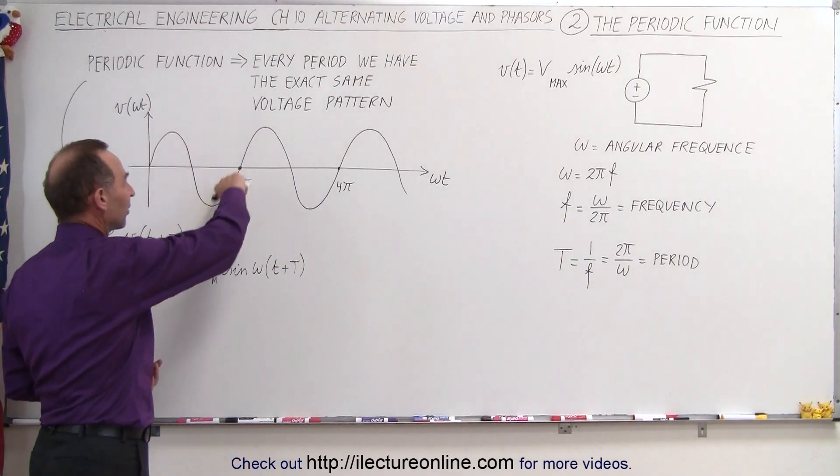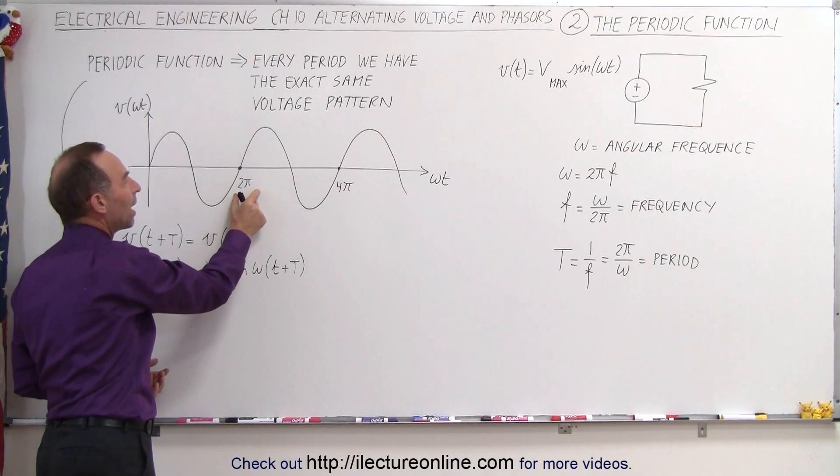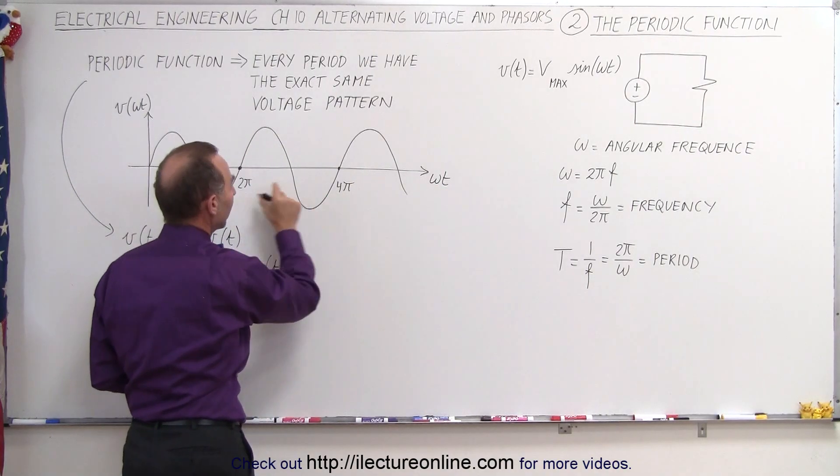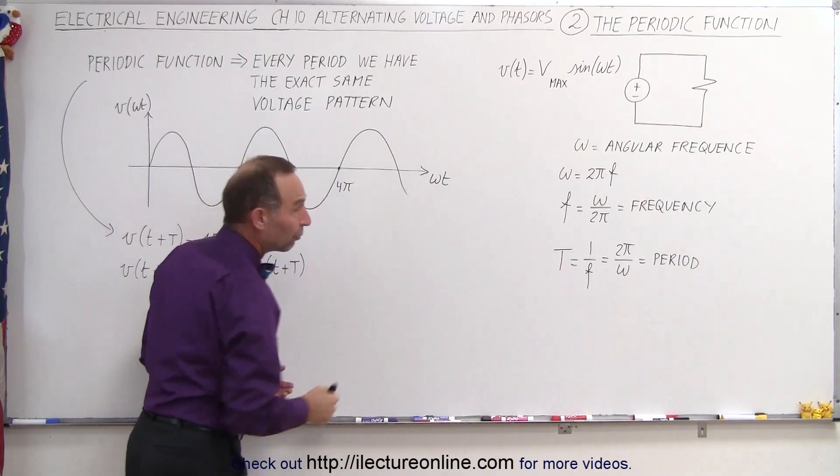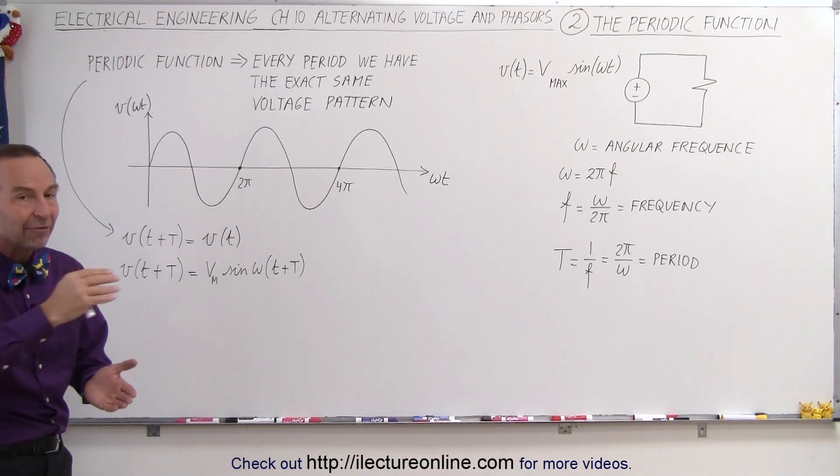You can see, of course, we have a sinusoidal function here, and it appears to be repeating at every 2π. In other words, when ωt equals 2π, when ωt equals 4π, and so forth, it looks like the function has the exact same value. It repeats every 2π.